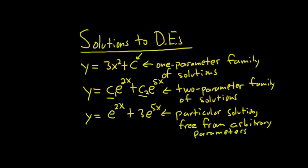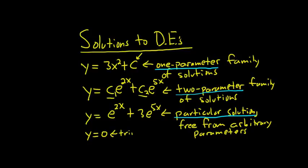So to summarize: if it has one c, it's a one-parameter family of solutions. If it has two c's, it's a two-parameter family. If it has no c's, it's a particular solution. And there's one more important case: y equals 0. This is a special case called the trivial solution.